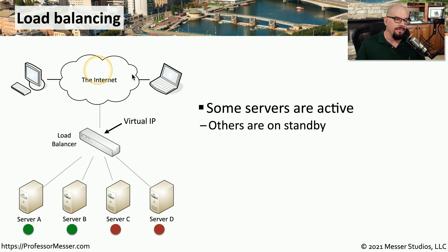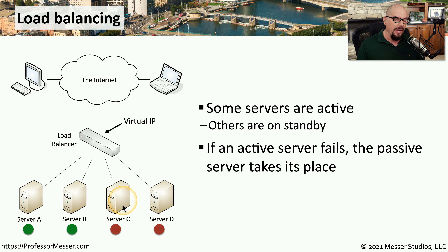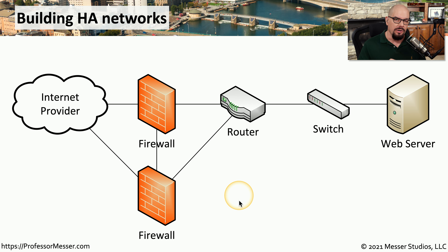Let's see how high availability would work on a system with a load balancer. This is a very common configuration where users on the internet need to access web servers on the other side of a load balancer. The load balancer has a virtual IP, or VIP, on the outside, so all of the users are connecting to that single virtual IP. Behind the scenes, each one of these servers has its own IP address that's only known to the load balancer. In this example, server A and server B are currently active, but we also have server C and server D on the network and powered up but not currently being used. If we have a failure of one of the initial servers, users that would normally connect to that server would find it is no longer available. If server A fails, the load balancer will recognize that server is no longer responding to queries, and it will begin using an additional server in its place — all users that were normally connecting to server A would now connect to server C.